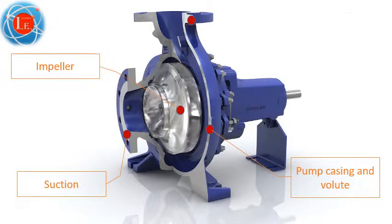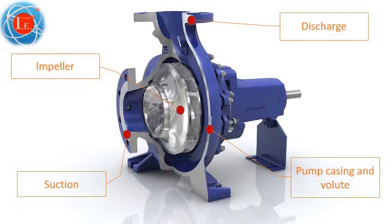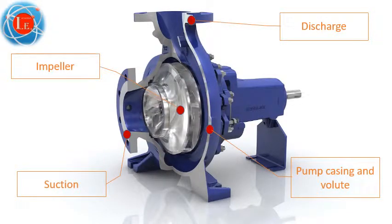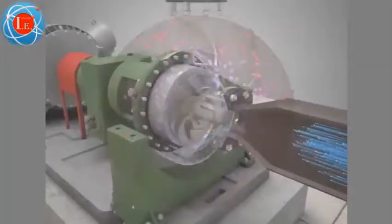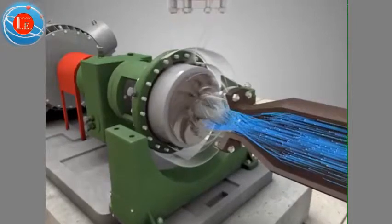Figure 1 is a simplified diagram of a typical centrifugal pump that shows the relative locations of the pump suction, impeller, volute, and discharge. The pump casing guides the liquid from the suction connection to the center, or eye, of the impeller.